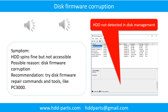Disk firmware corruption. Symptom: The hard drive spins fine but is not accessible by any computer. Possible reason: disk firmware corruption. Recommendation: Try disk firmware repair commands and tools like PC3000. The following is the sound from a hard drive which experienced disk firmware corruption.